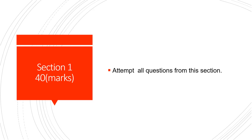The first section of the paper is objective questions — Section 1. It will consist of 40 marks. All questions should be attempted from this section. Let's look at what the questions under this section are.